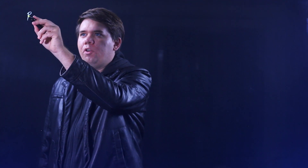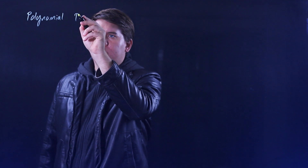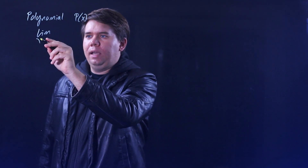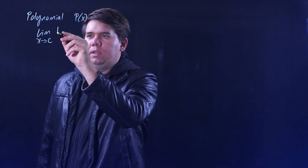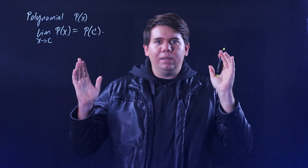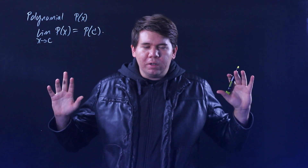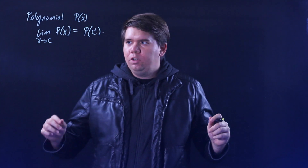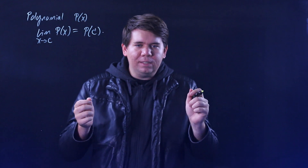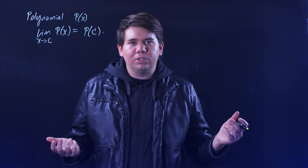We saw that when we have some polynomial p of x, the limit as x approaches some constant c of p of x will just be p with that constant plugged in. This is because with the limit laws you can break down the polynomial to all its pieces, and then as x runs to c, you end up with just c being plugged in for x. But how about for other kinds of functions?